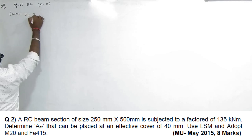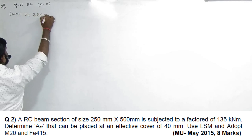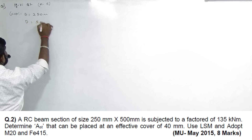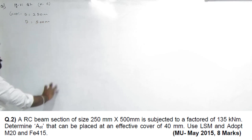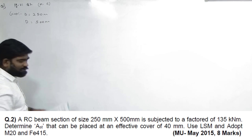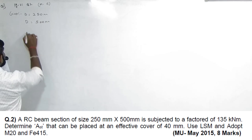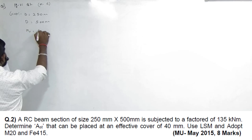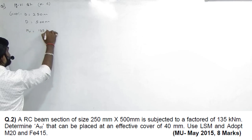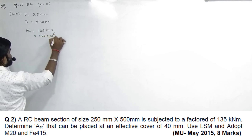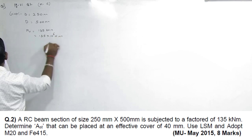Small b is equal to 250 mm. Capital D = 500 mm — capital D 500 kyun? Effective word nahi likha hai usko. Factor moment matlab MU bolte ya MD bolte.